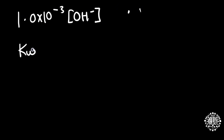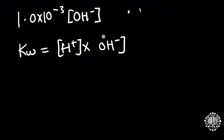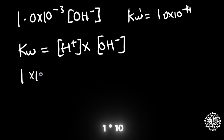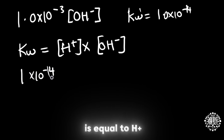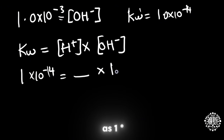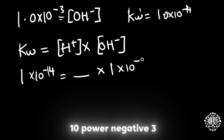Let's say you are given 1 times 10 to the power negative 3 of OH⁻ ions, and you are told to find whether this is neutral, a base, or an acid. First, we know that Kw is equal to the H⁺ multiplied by the OH⁻ ions. Kw is always 1 times 10 to the power negative 14. We will substitute the values: 1×10⁻¹⁴ equals H⁺ multiplied by OH⁻, which is given as 1 times 10 to the power negative 3.